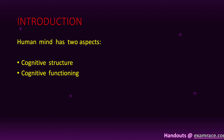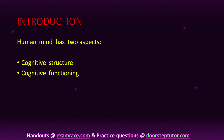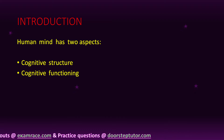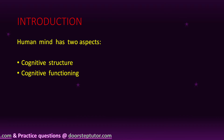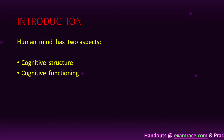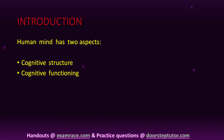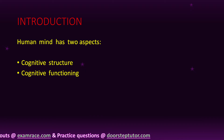The term cognitive development refers to the process of growth and change in intellectual or mental abilities, such as thinking, reasoning, and understanding. All processes related to our mental abilities is called cognitive development. The word cognitive is taken from cognition, and the meaning of cognition is to recognize or to understand something. This is totally related to our mind.